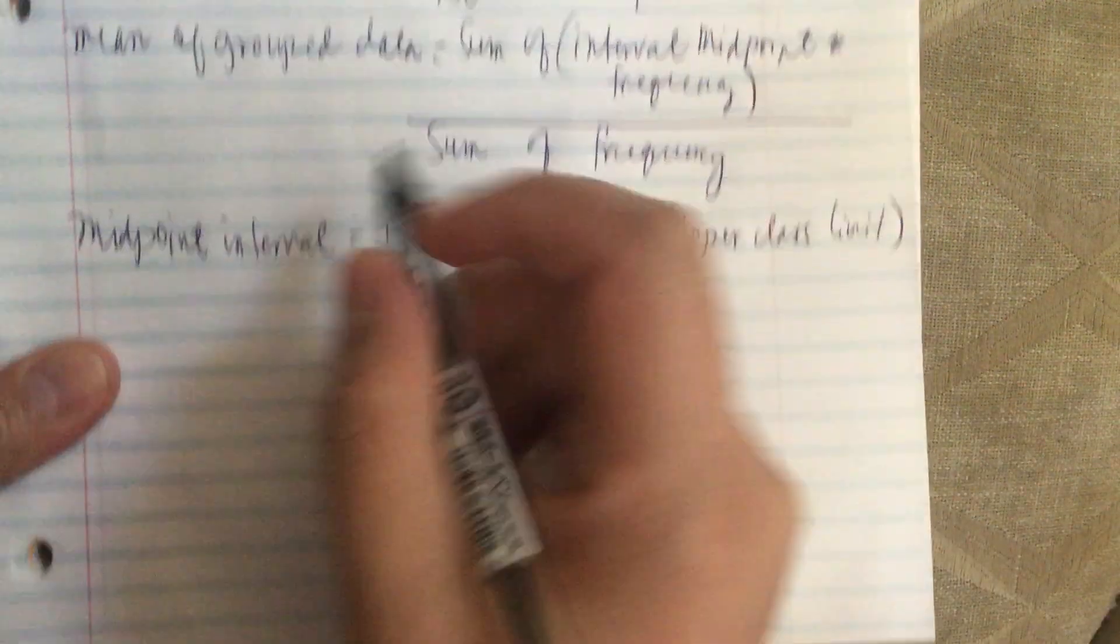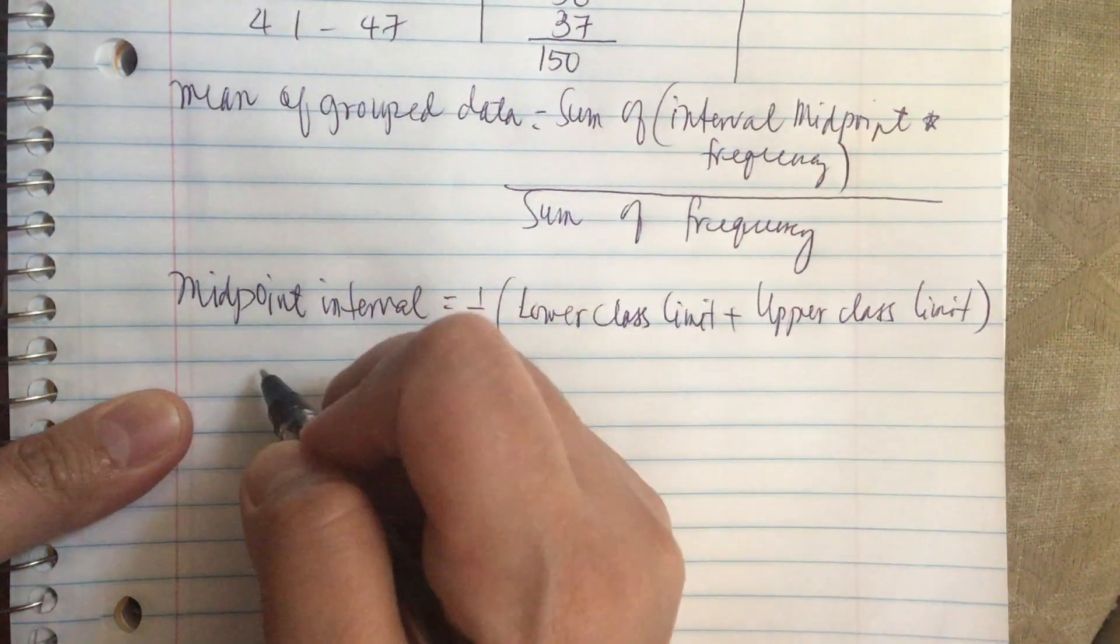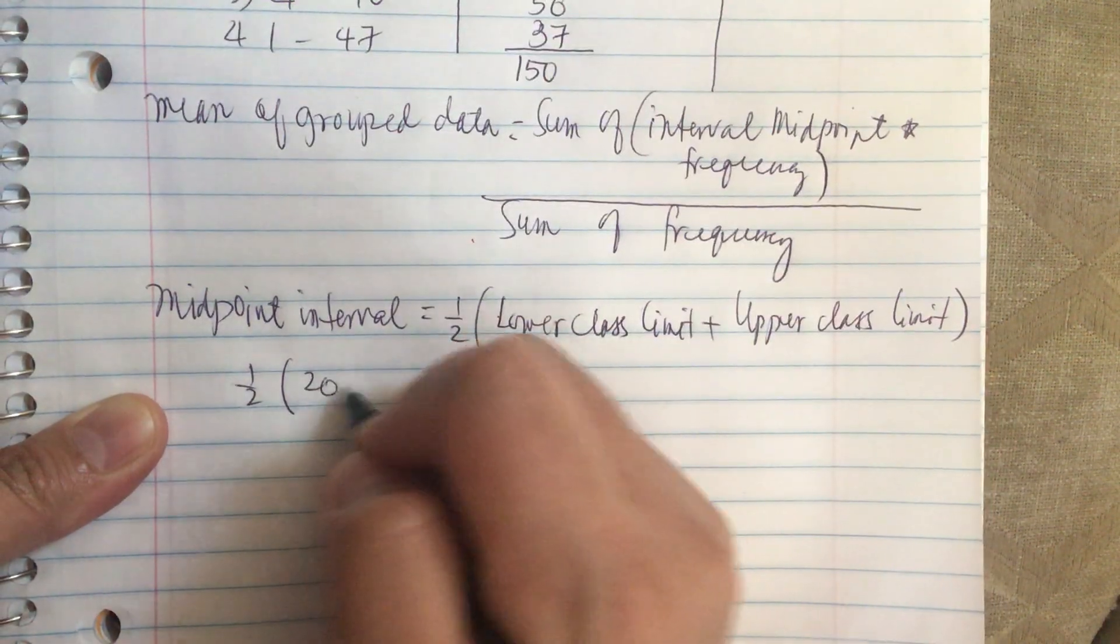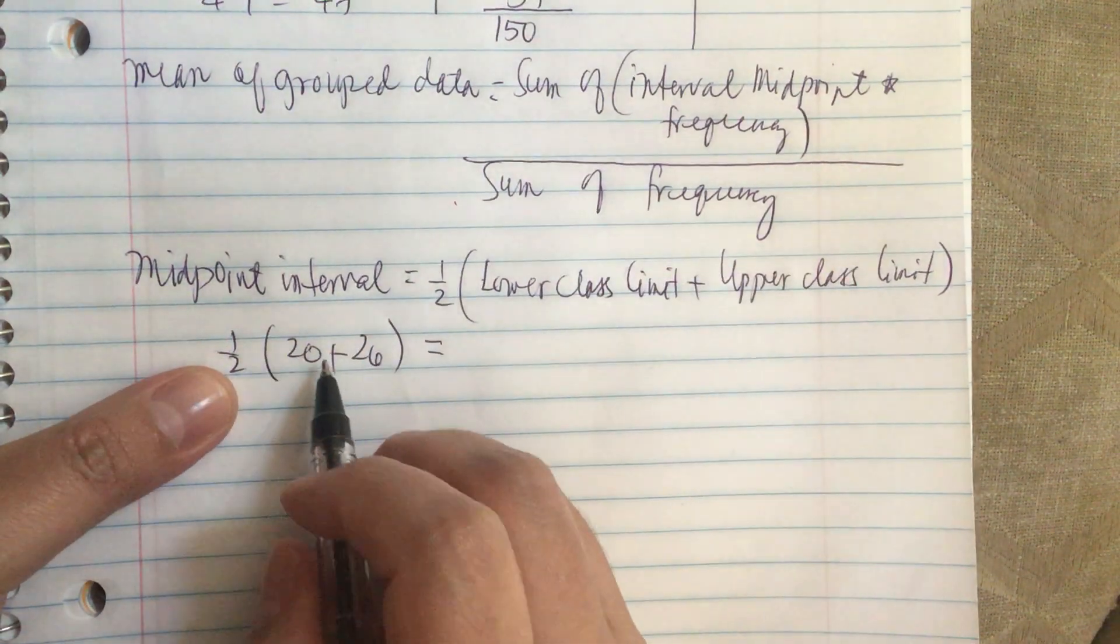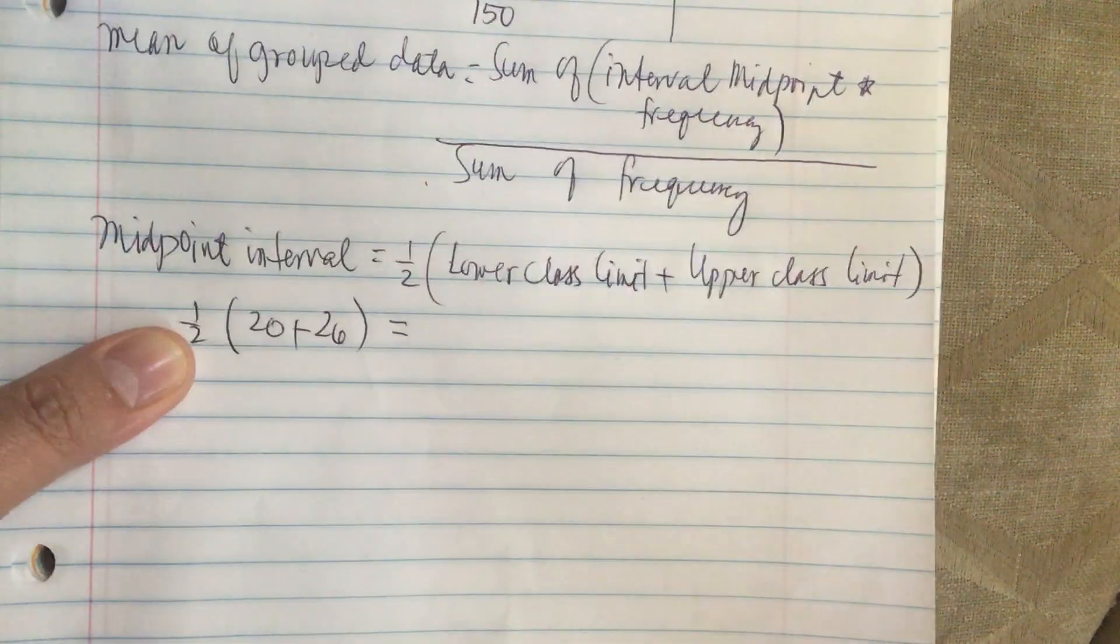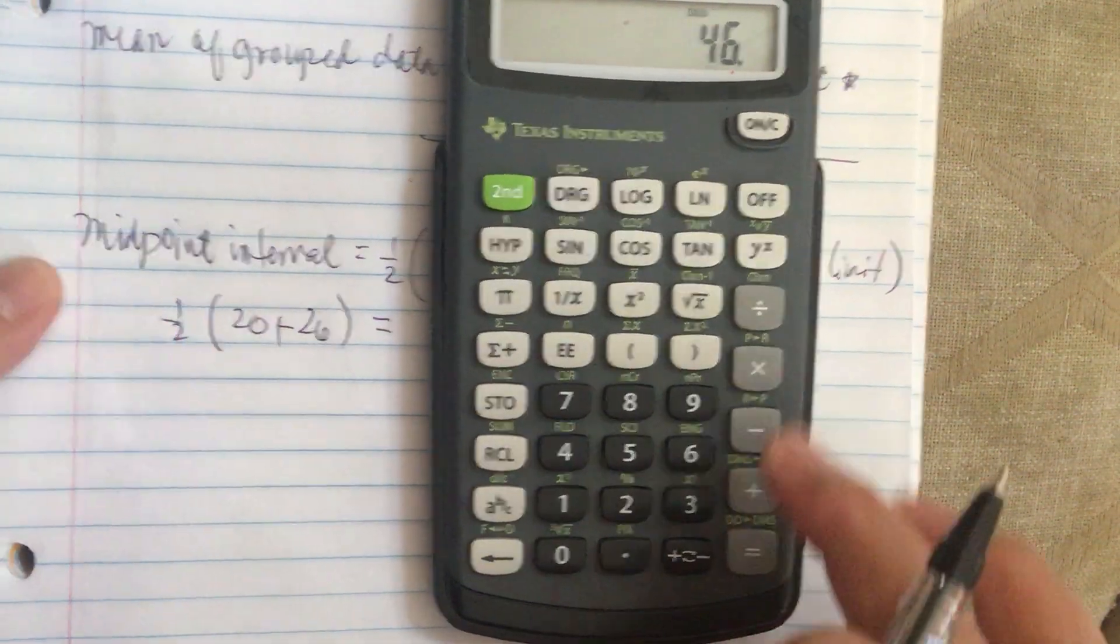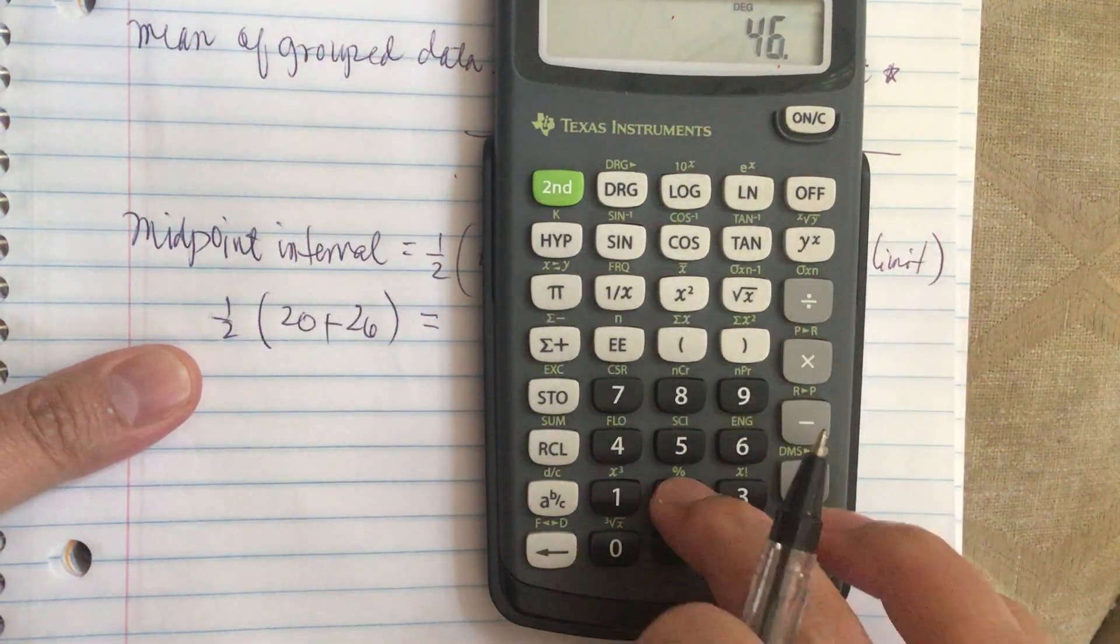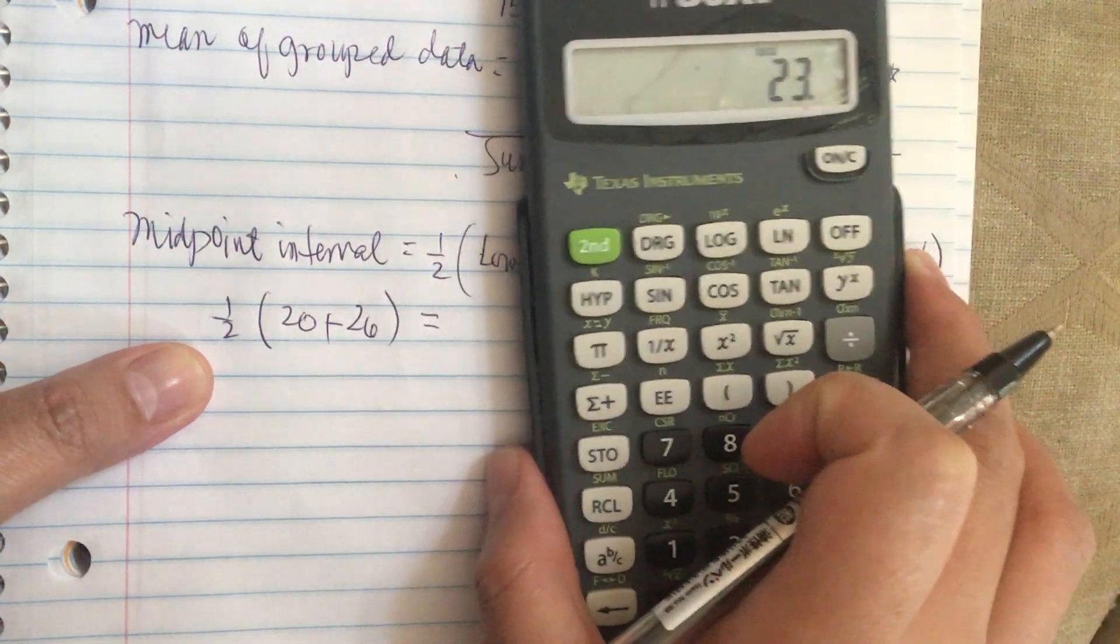Let's do the first one. We have one half times 20 plus the upper class which is 26. So 20 plus 26, now this is multiplied by one half, so we divide this by 2. It's equal to 23.